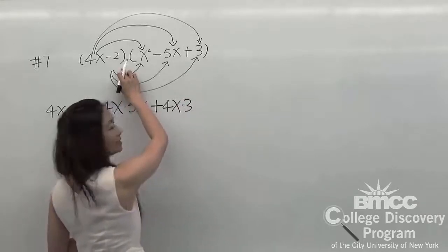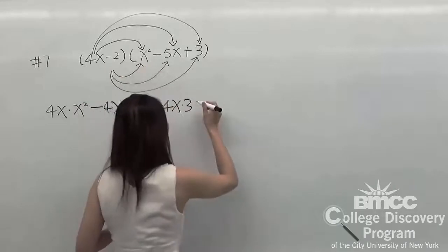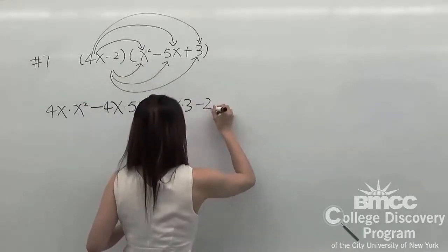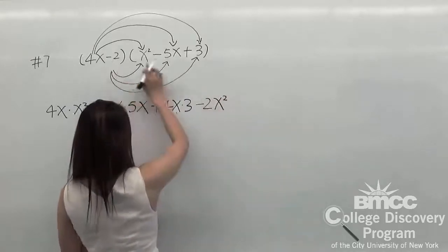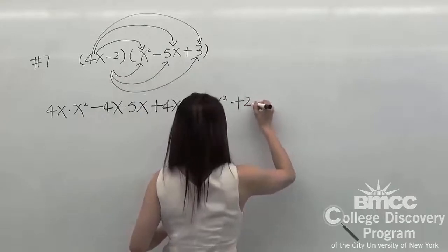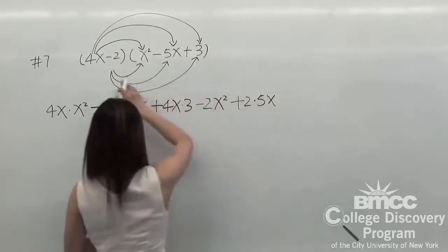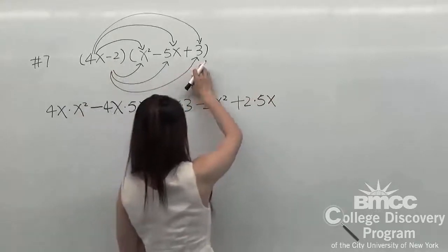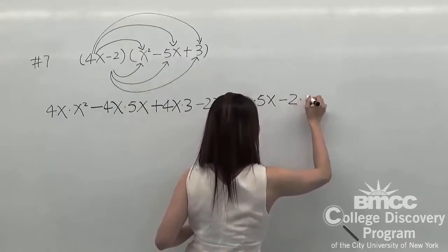Second term in the first expression, it will be negative. Negative, positive equals positive. So it will be negative 2 times x squared. Negative, negative equals positive: 2 times 5x. The last one is negative 2 and 3, so negative 2 times 3.